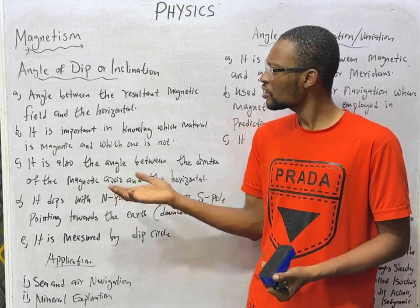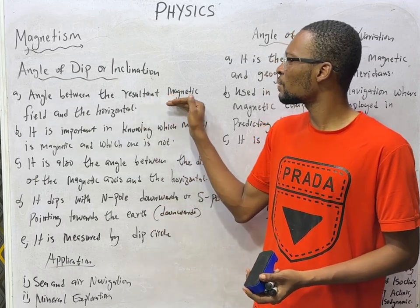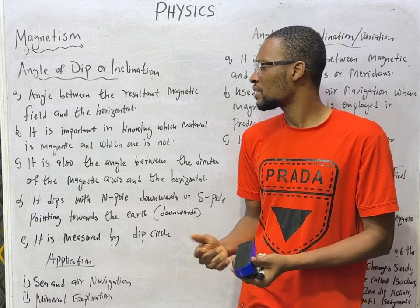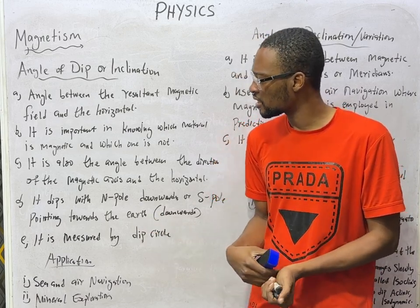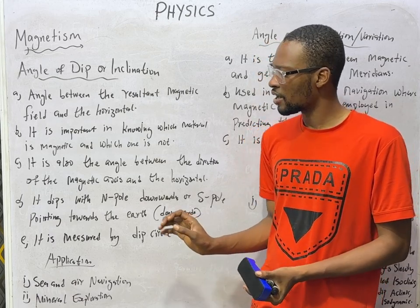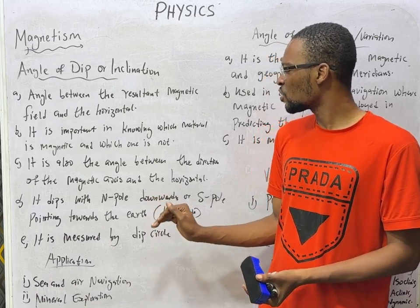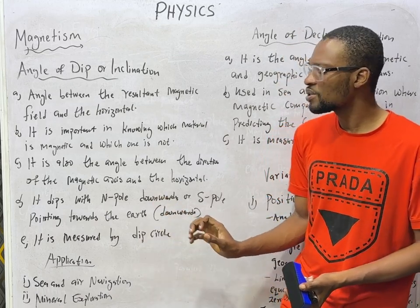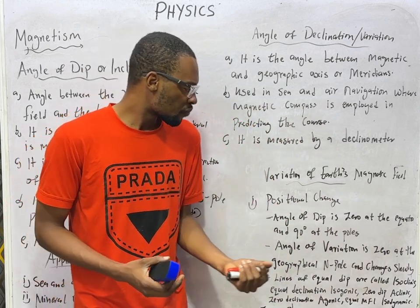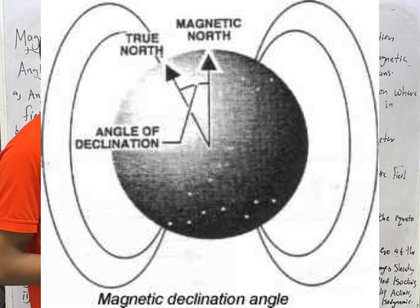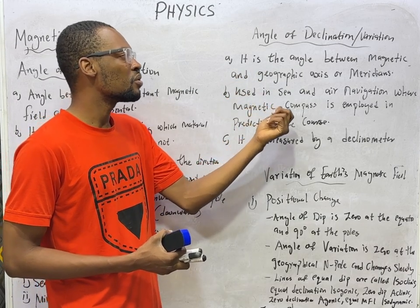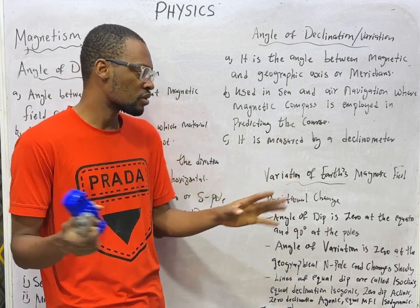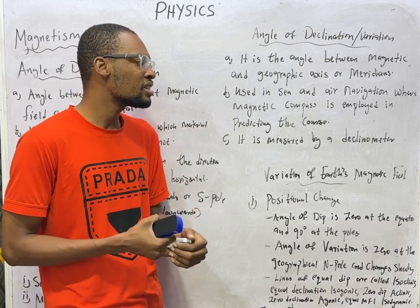The angle of dip is the angle between the resultant magnetic field and the horizontal — it is the angle which the magnetic field makes with the horizontal. It is important in knowing which material is magnetic and which is not. It is also the angle between the direction of the magnetic axis and the horizontal. The angle of dip is measured using a dip circle. The angle of declination or variation is the angle between the magnetic and geographical vertical axis or meridian. It is used in sea and air navigation where a magnetic compass is employed in predicting the course, and it is measured using a declinometer.